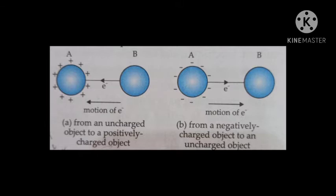When two charged objects are joined together, electrons flow from the object having more electrons to the object having fewer electrons. This flow continues till the number of electrons on both objects becomes equal. The object that loses electrons gets positively charged, and the object that gains electrons gets negatively charged.